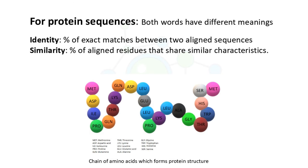When we talk about protein sequences, both words — sequence similarity and identity — have different meanings. Identity, in the case of protein sequences, is the percentage of exact match between two aligned sequences. Similarity means the percentage of aligned residues that share similar characteristics. A chain of amino acids which forms a protein structure is shown in the picture.